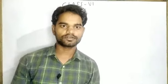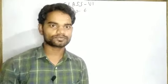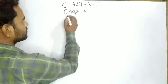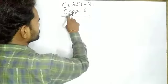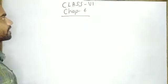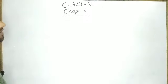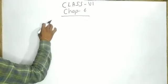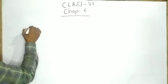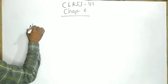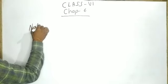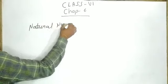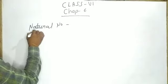Dear students of RLPS, class 6, today we are going to discuss chapter 6, that is negative numbers and integers. First of all, we have to discuss the natural numbers and whole numbers.